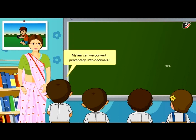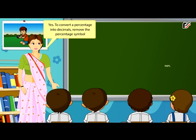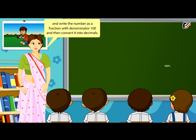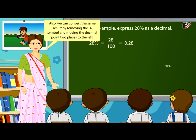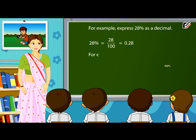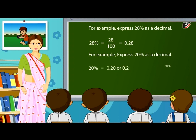Can we convert percentage into decimals? Yes. To convert a percentage into a decimal, remove the percentage symbol, write the number as a fraction with denominator 100, and then convert it to a decimal. For example, 28% = 28/100 = 0.28. We can also do this by removing the percentage symbol and moving the decimal point two places to the left. For example, 20% = 0.20 or 0.2.